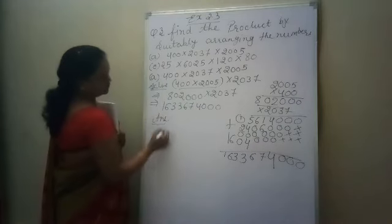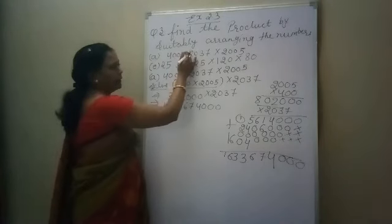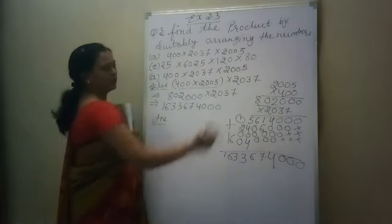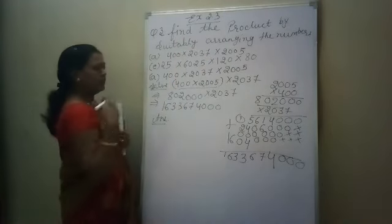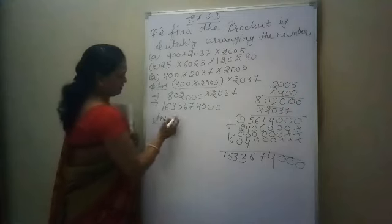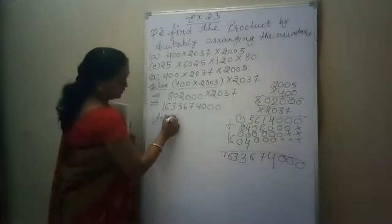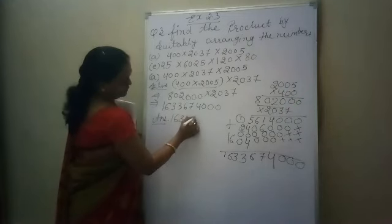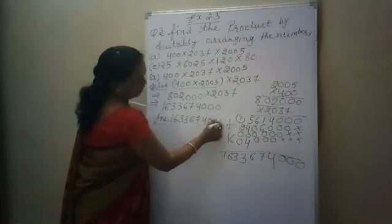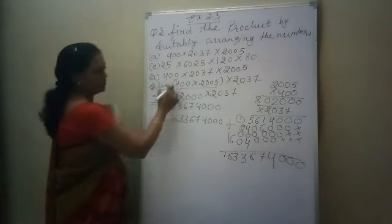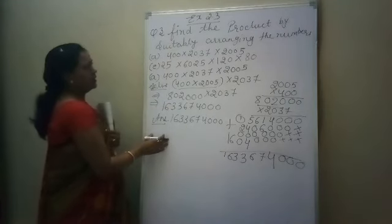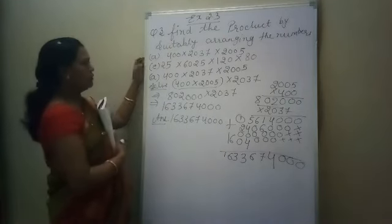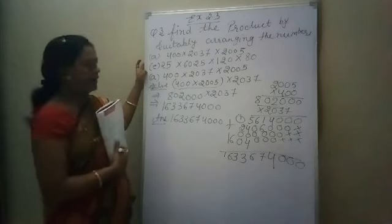And by the suitable arrangement we can multiply 3 numbers, 4 numbers, and more than 5 numbers. It is over. I hope you understood question number 3, A part. Now we will do the E part.